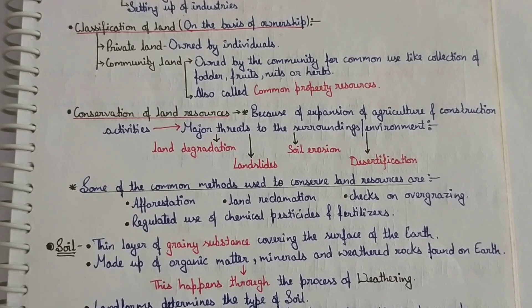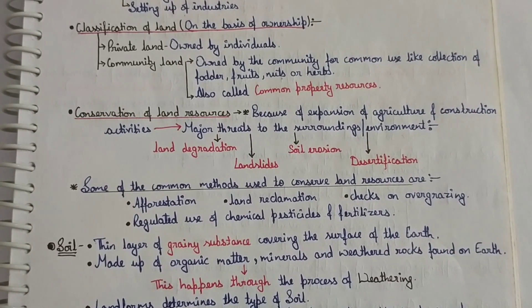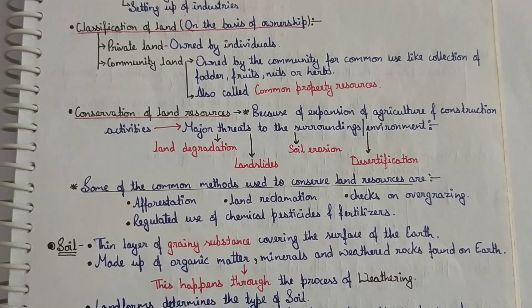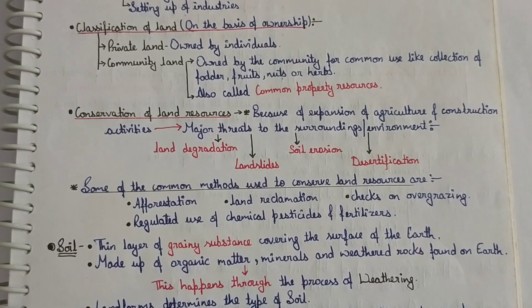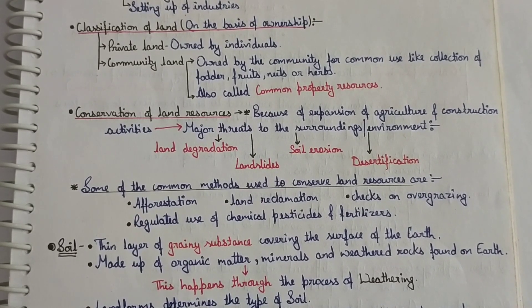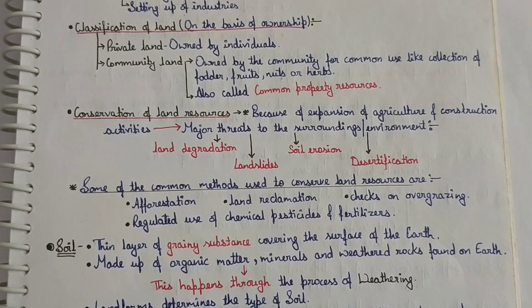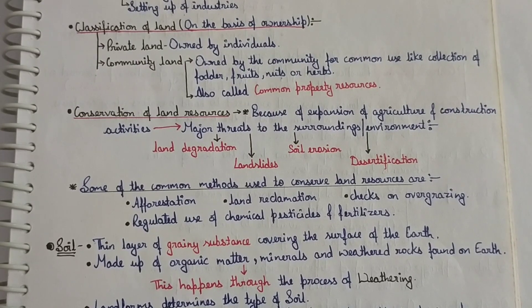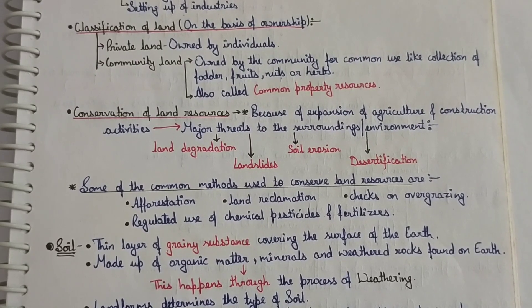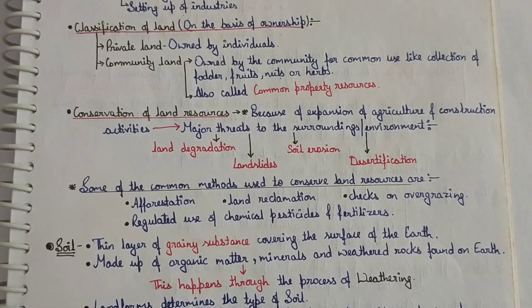So without wasting your more time, let's study a little bit. In the last class we discussed that our land is classified in two parts: first is private land, second is community land. Today we will start with the next point.